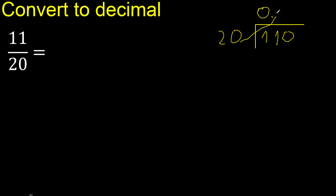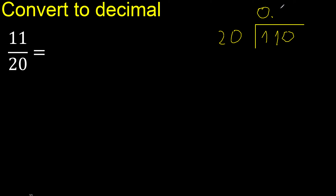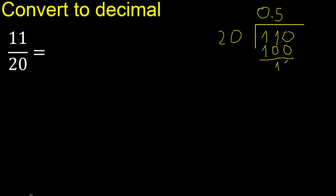20 — multiply by which number is nearest to 110 but not greater. Multiply by 6 is 120, which is greater. Multiply by 5 is 100, which is not greater — ok. Subtract: 110 minus 100 is 10.